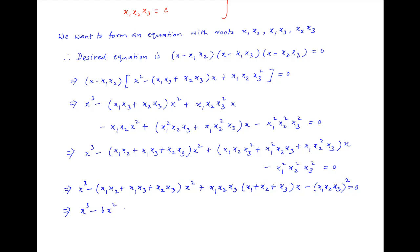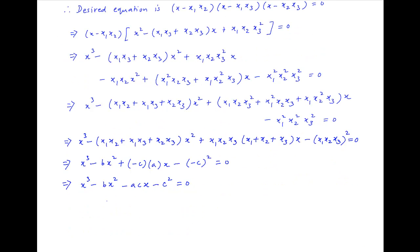Using the results obtained above, this implies that the desired equation is x³ − bx² + (−c)(a)x − (−c)² = 0, which simplifies to x³ − bx² − acx − c² = 0. And this is the desired equation.